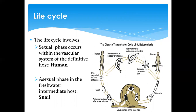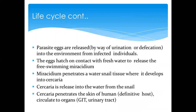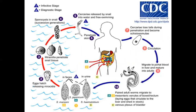The adult worm migrates to the different target areas — whether the bladder or the intestines — where it then releases eggs. To summarize the life cycle: eggs are released into the environment, hatch upon contact with fresh water into miracidia, which penetrate snails and develop into cercariae, which are released from the snail into water and then penetrate the skin of the human host.